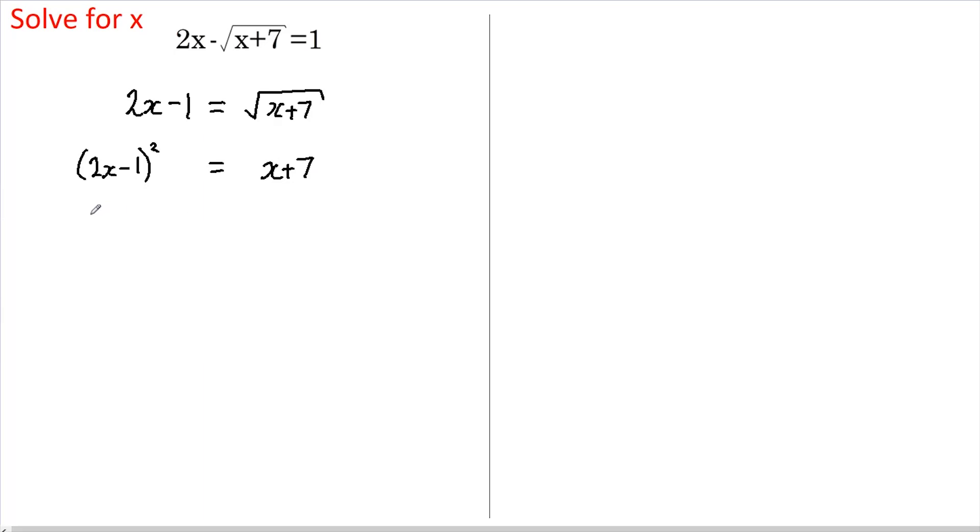Now let's expand this square, so this becomes 2x minus 1 multiplied by 2x minus 1. And this of course stays the same, x plus 7.